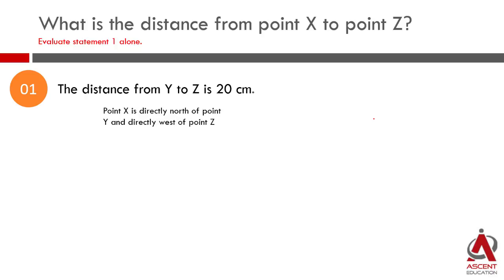Point X is directly north of point Y. North is up, south is down. So moving north is basically moving up. Moving south is basically moving down. So directly north is north. East is moving towards right and west is moving towards left.